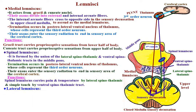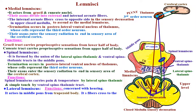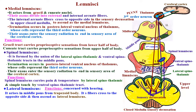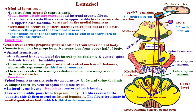Lateral lemniscus, which is the lemniscus concerned with hearing. It arises in the middle part of the pons from the trapezoid body. The fibers cross to the opposite side and ascend upwards as the lateral lemniscus. Termination occurs in the medial geniculate body, which is the third-order neuron. The axons of the cells of the medial geniculate body terminate in the auditory area of the temporal cortex.